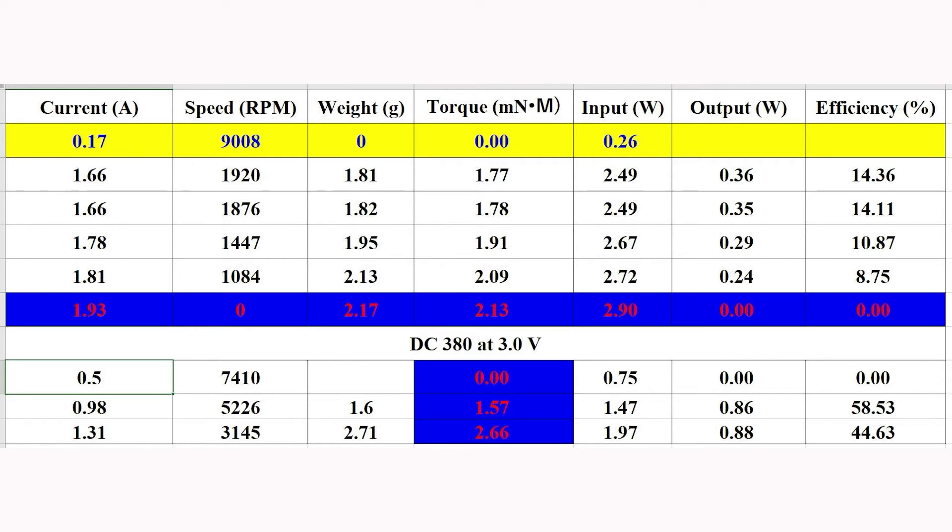Increase the friction force, the speed decreased to 3145 rpm. The weight changed to 2.71 g, and the torque changed to 2.66 mNm.